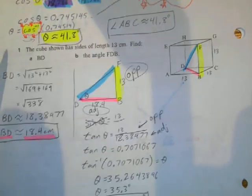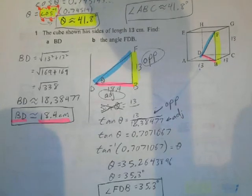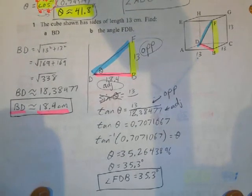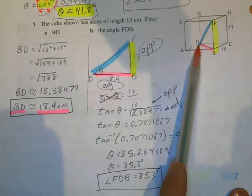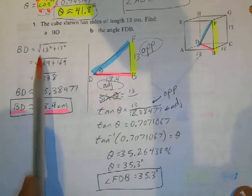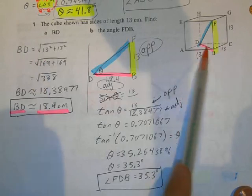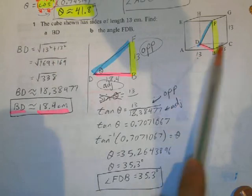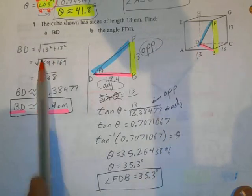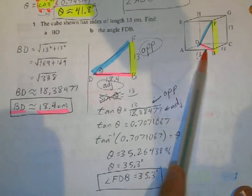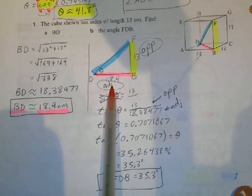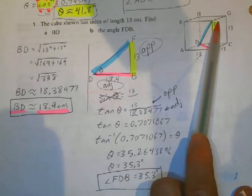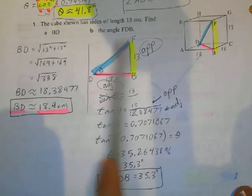You may want to hit pause if you need more time to look at this. Find the length of BD. So BD is the bottom of this cube. So I'm not doing this in three dimensions. I just 13 squared plus 13 squared, add those together, take the square root. The bottom of the box, this length, is 18.4. So now I know that's 18.4. You already know the height of the box is 13.